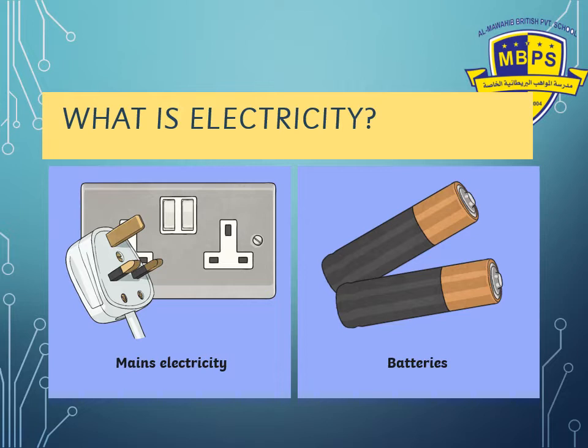What are the two main sources of electricity? First, mains electricity — what we get from sockets that comes into our house through wiring. Second, batteries — batteries of different forms found in cars, remotes, clocks, and watches of many different sizes. Mains electricity comes from power stations through wires in our walls, and we access it by putting a plug into a socket.